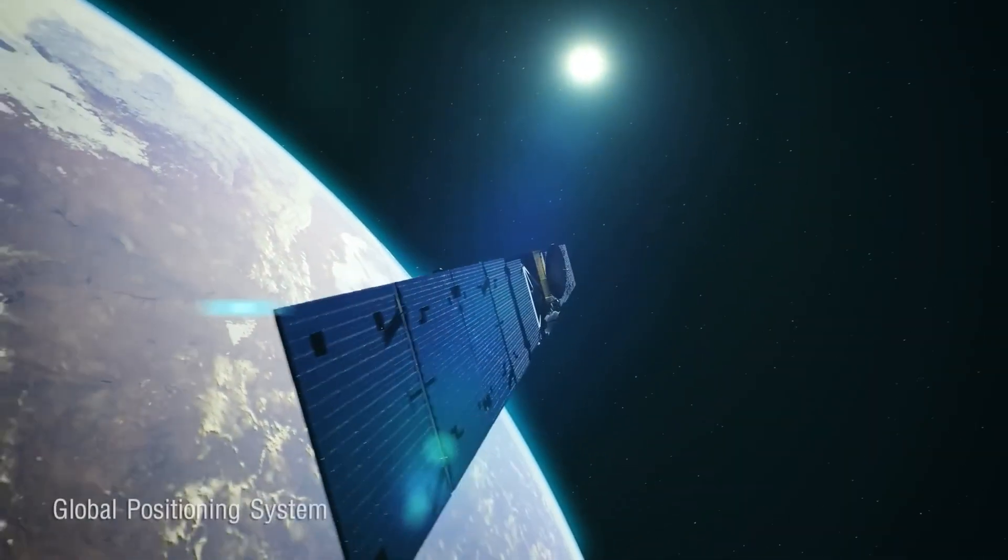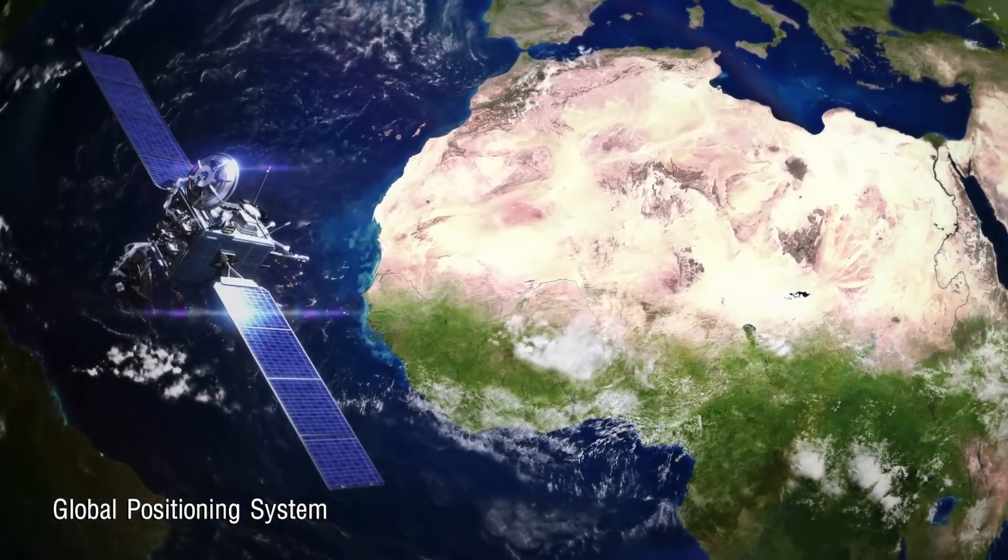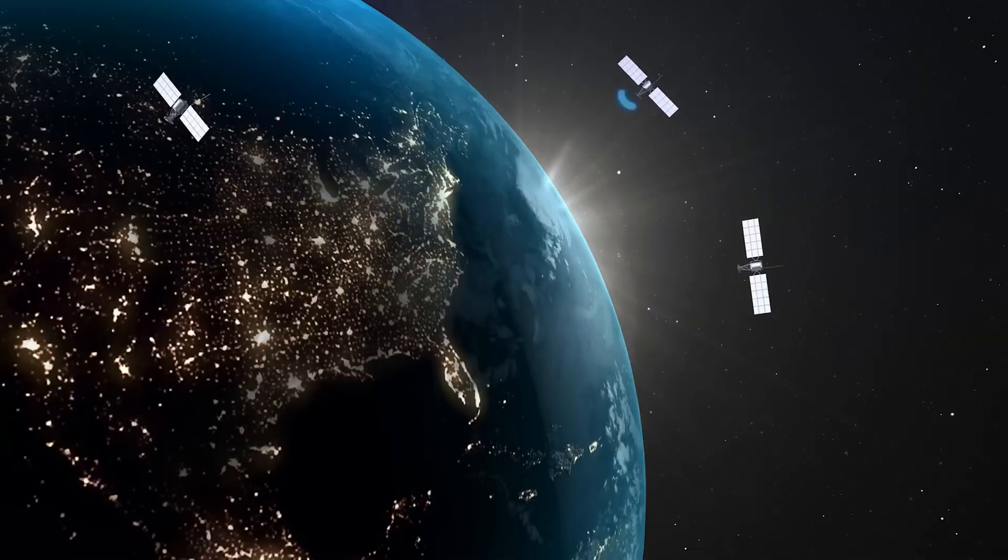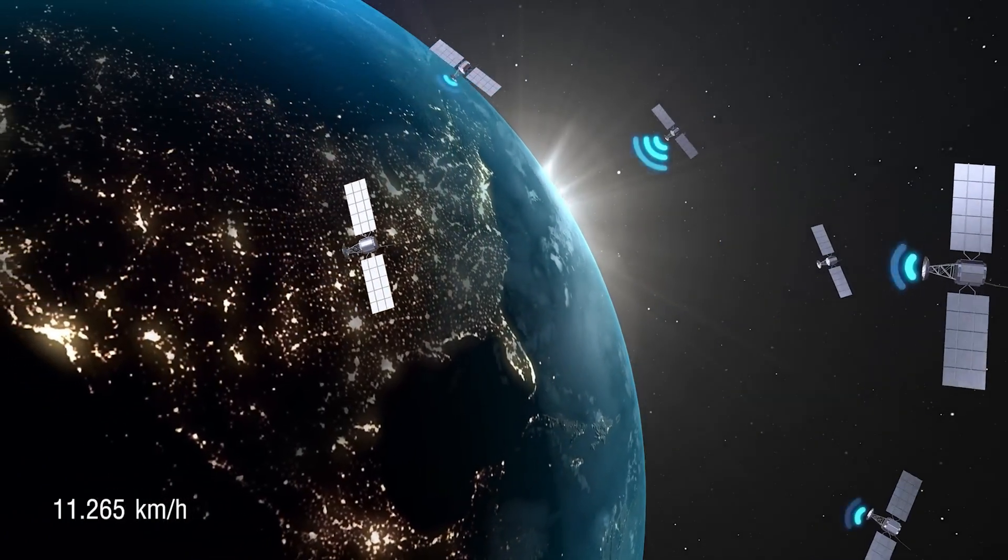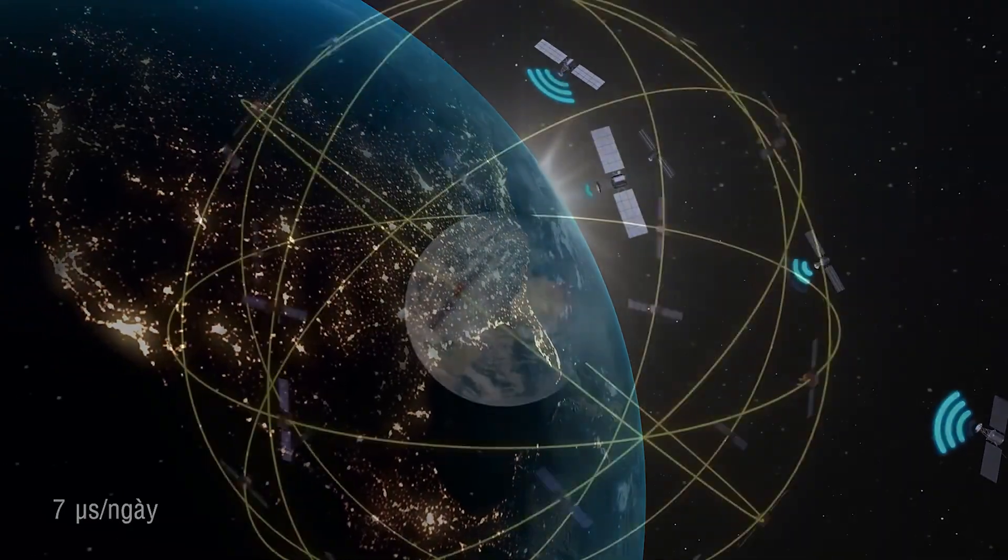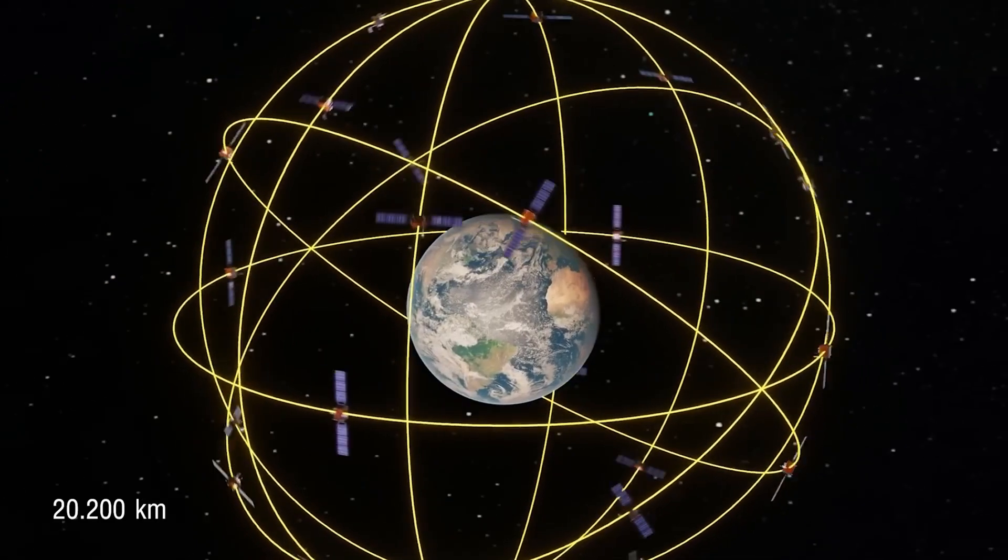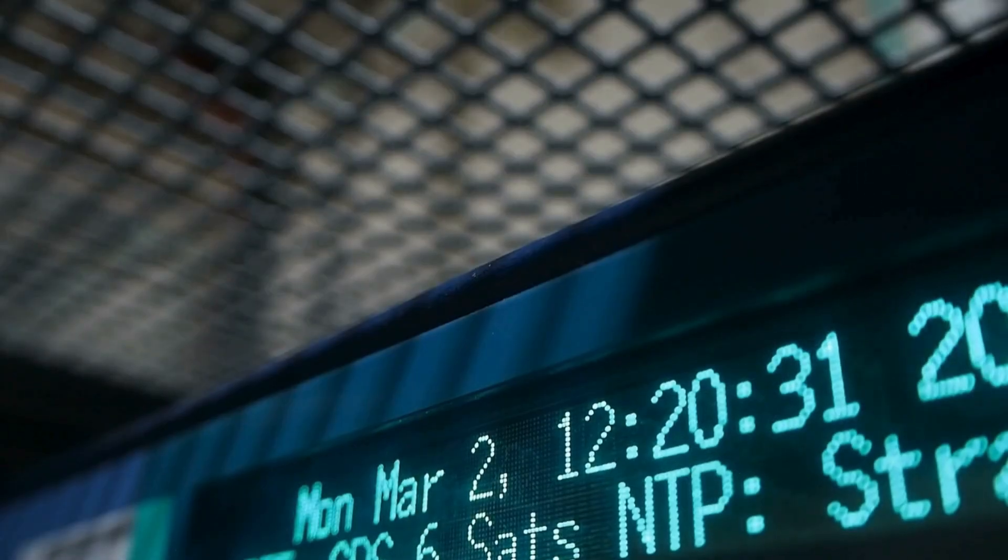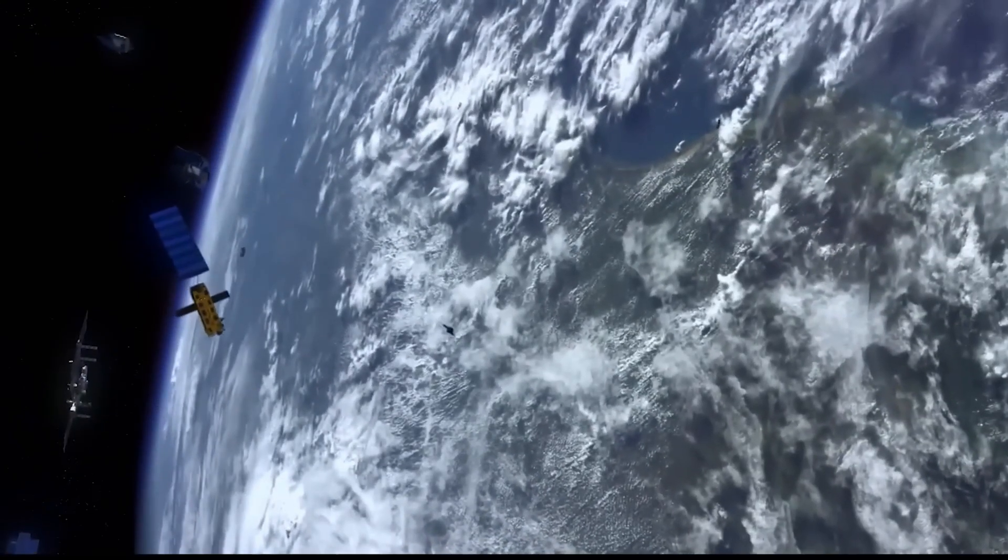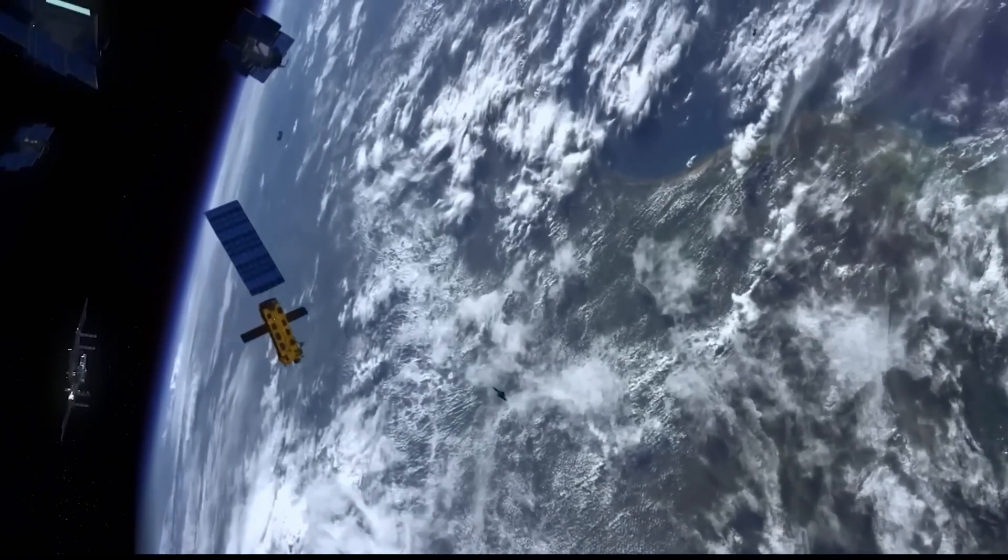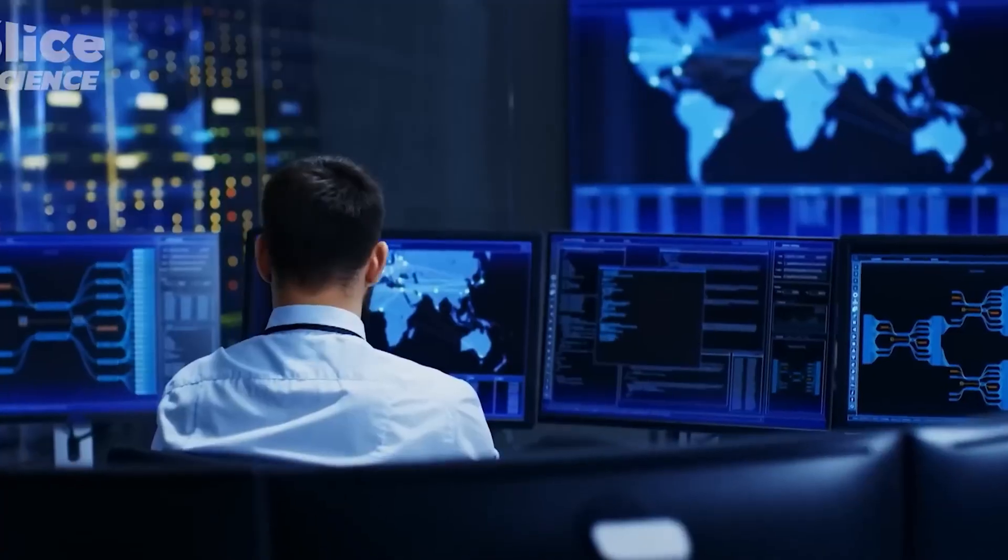In fact, the clocks on 24 GPS satellites in the global positioning system are constantly affected by the time dilation effect. They move faster than we do on the Earth's surface at a speed of 11,265 km/h. As a result, they are slowed down by 7 microseconds each day. Simultaneously, they are farther from the Earth by approximately 20,200 km experiencing weaker gravitational pull, so they also gain 45 microseconds every 24 hours. In total, the clocks on GPS satellites are actually running 38 microseconds faster each day compared to clocks on Earth.